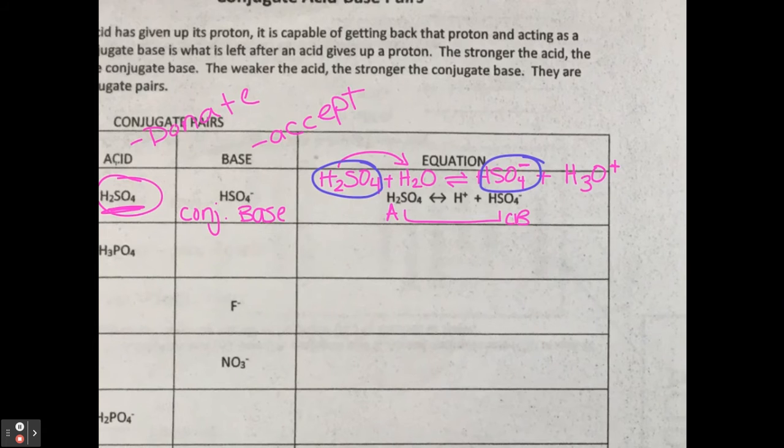Oops, let's do that in different color. Water is acting as a what? If this is an acid, what does this one have to be? That has to be a base, okay? And then, H3O would be the conjugate acid. Conjugate base, conjugate acid. So, at least label one, so that you have one example that you can come back to instead, okay?